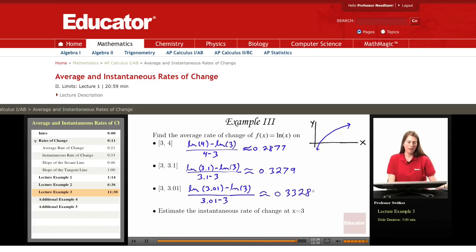And again, it might not be possible just from these results to guess the instantaneous rate of change at x equals 3. But I'm going to argue that it turns out the instantaneous rate of change here is a third, 0.3 repeating.